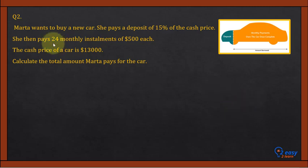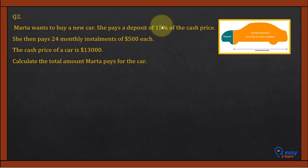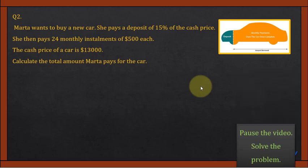Question 2: Mata wants to buy a new car. She pays a deposit of 15% of the cash price, then pays 24 monthly installments of $500 each. The cash price of the car is $13,000. Calculate the total amount Mata pays for the car. I suggest you pause this video, solve the problem, and check your solution.